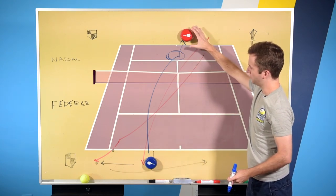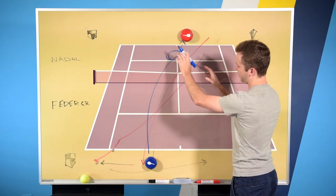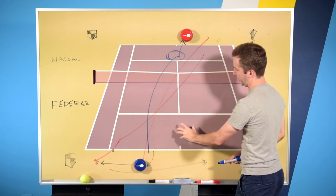And what he's trying to do is cut down on the angles, keep Rafa back, and hopefully Rafa leaves a ball that's kind of sitting that Fed can then run around and hit a forehand with.